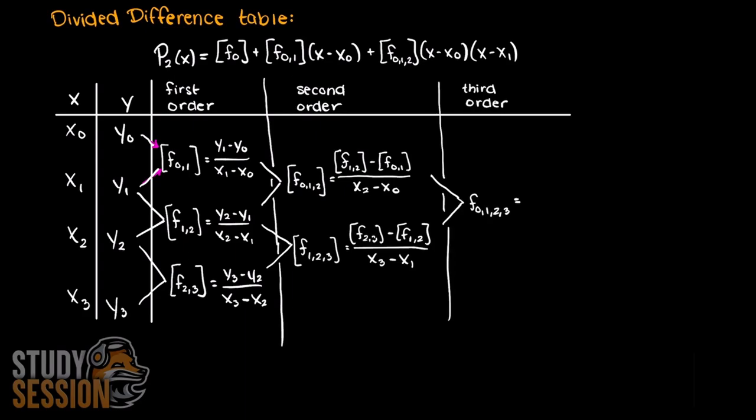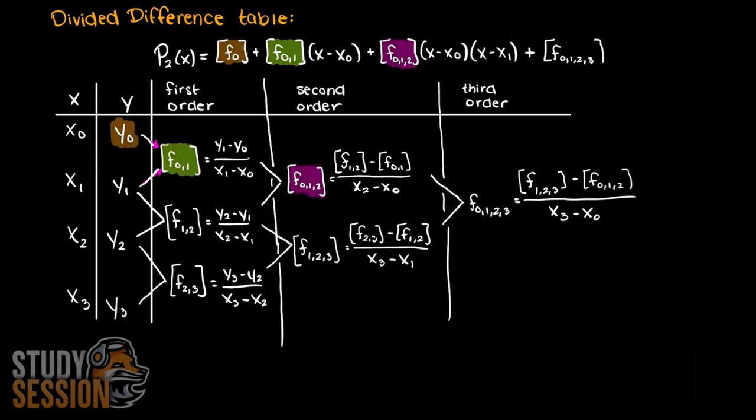As you can see, our new middle value is just continually taking the divided difference of the two lower orders that construct it. Through this table, we can easily find our necessary coefficients for our Newton's polynomial, as the top row here is all of the divided difference coefficients necessary to find your interpolating polynomial. In the coming videos I will complete examples walking through several divided difference problems, so stay tuned if you are at all confused about this topic.